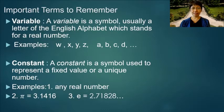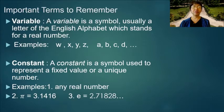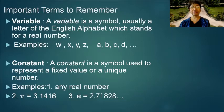Constant: a constant is a symbol used to represent a fixed value or a unique number. Examples include any real number, the number 2, pi — whose value is 3.1416 — and the number e, which stands for 2.71828.